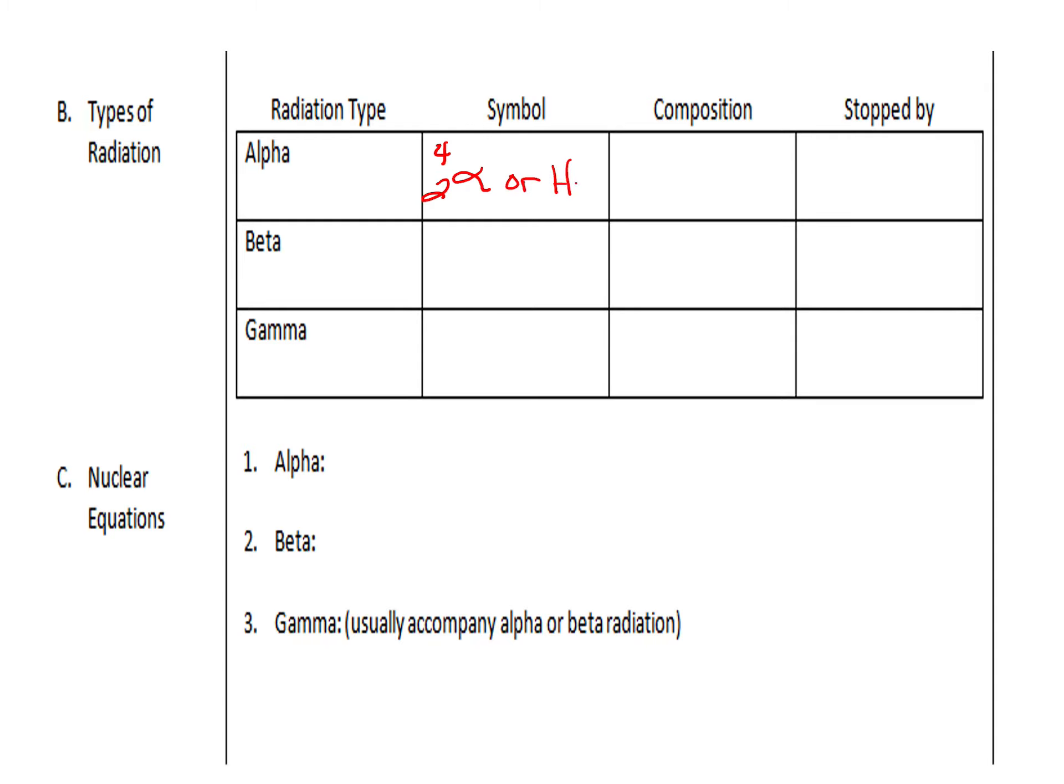A lot of times you'll see alpha radiation depicted as the symbol for helium. And then 2 is the atomic number of helium. And 4 is the mass number for helium. So helium has an atomic number of 2, so it has 2 protons. And then a mass number of 4, so there are 2 neutrons. So the composition of an alpha particle, it are 2 protons and 2 neutrons. And an alpha particle can be stopped by paper.